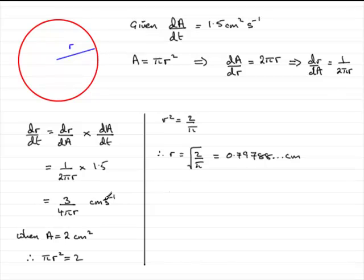If we substitute this into the equation for dr/dt, that's 3/(4πr), we have dr/dt equals 3 divided by 4π multiplied by 0.79788. If you work that out on your calculator, you get 0.29920 and so on.